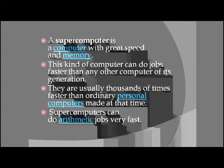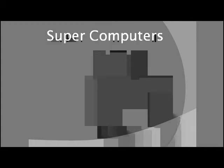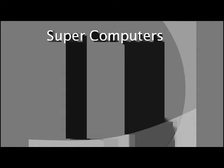A super computer has very great speed and memory. They are usually thousands of times faster than ordinary personal computers made at that time. Super computers can do arithmetic jobs very fast. Param, UR2, and Tata Eka are examples of Indian super computers.